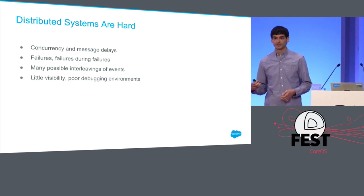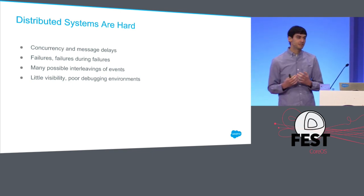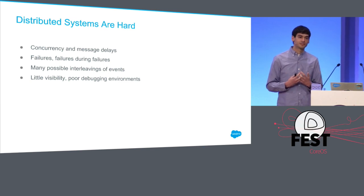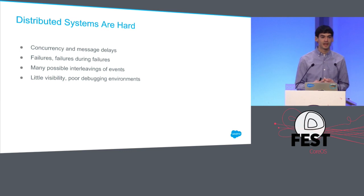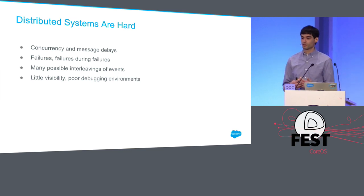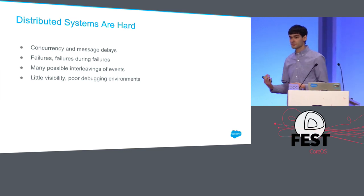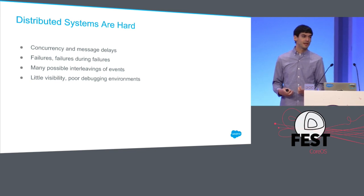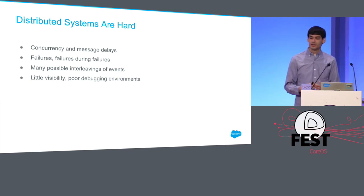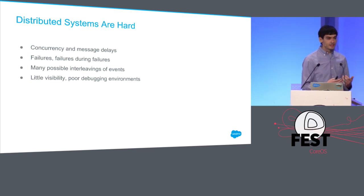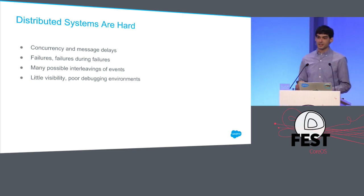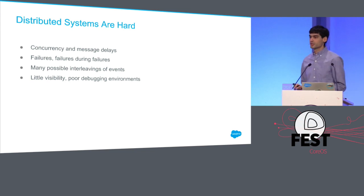You have message delays, where by the time you receive a message, it's already stale. The best information you can possibly have is no longer the state of the world. You have to deal with failures, and these can come at any inopportune time — including during other failures. So it's not like writing an exception handler and you're done. You have to totally change the way you think about your program.